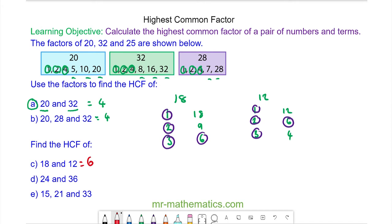Do you want to try and work out the highest common factor of 24 and 36? And then for question E, 15, 21 and 33? You can pause the video and resume it when you are ready.